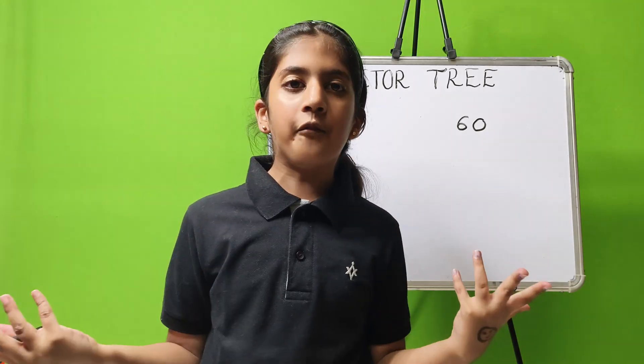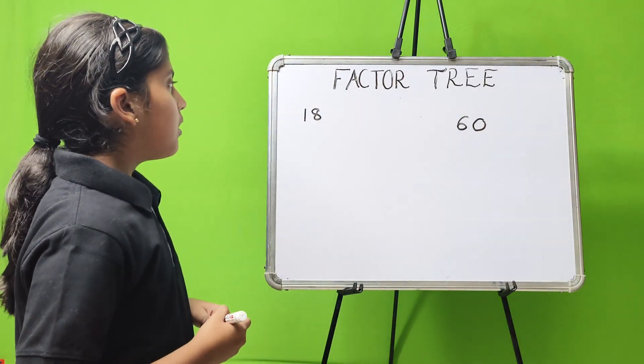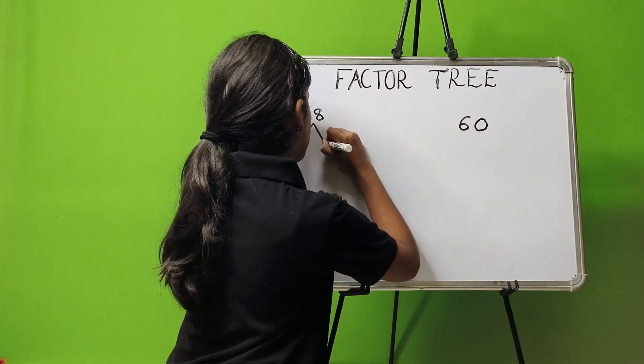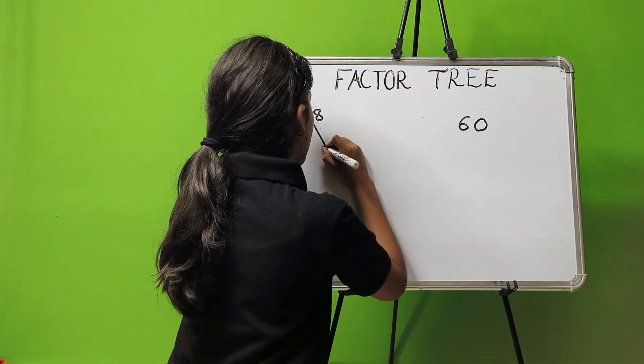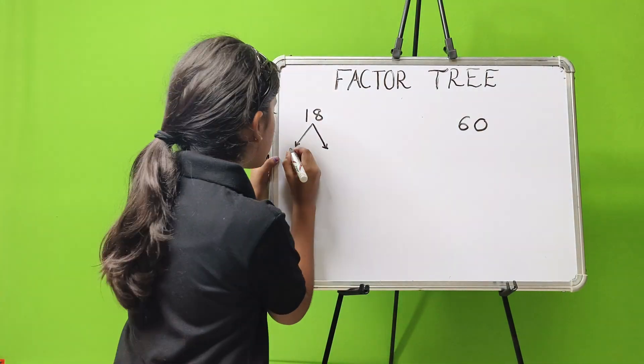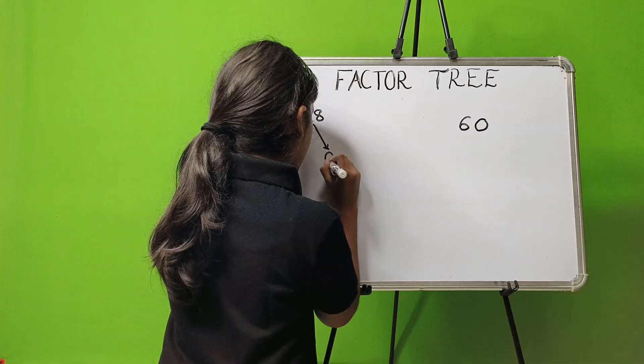Now let's start today's video. How to make a factor tree? Suppose we have to make the factor tree of 18. We will make two arrows like this and write two factors of 18. Suppose I am writing 2 and 9.